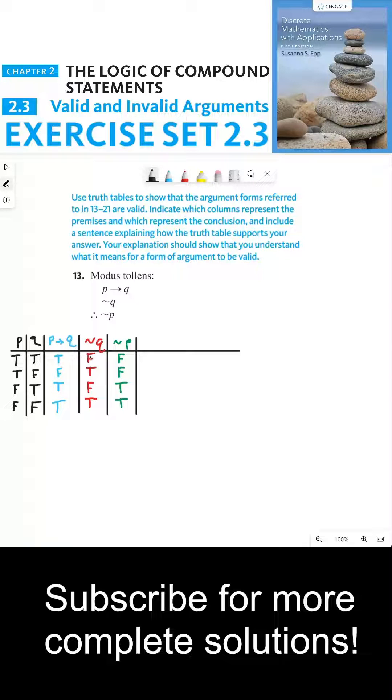So in the first line, not Q is false, and so one of our assumptions is false, which means that we don't have to consider the first line to determine whether this is valid or not. In the next line, P implies Q is false, which means one of our assumptions is false, and so we don't have to consider whether or not this makes the argument form invalid.